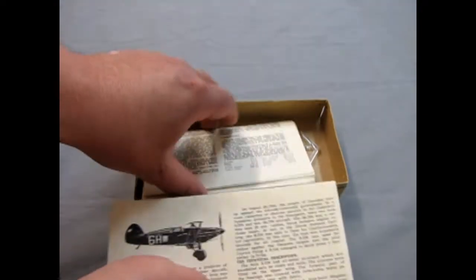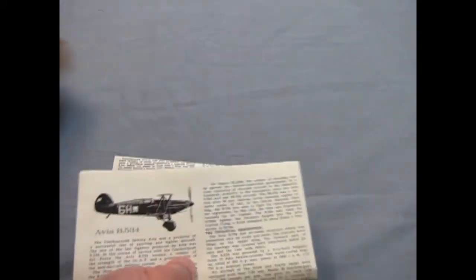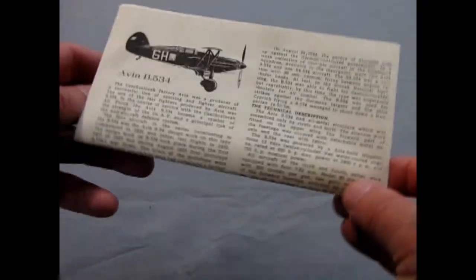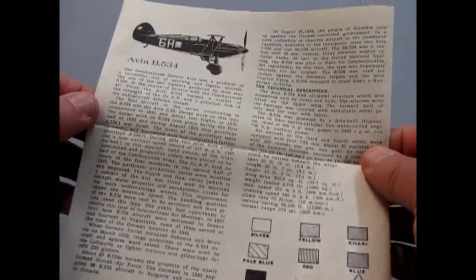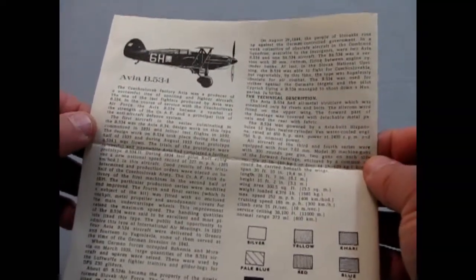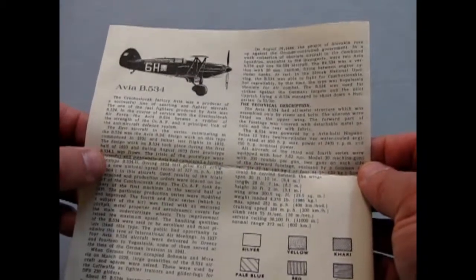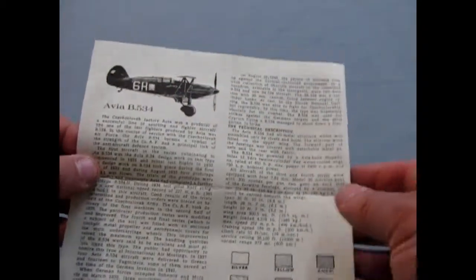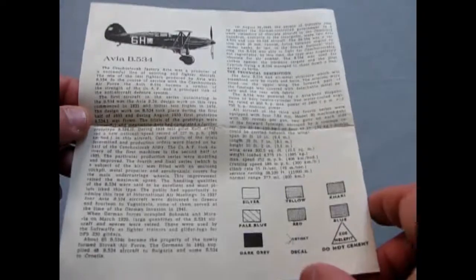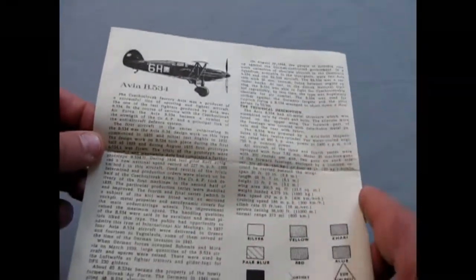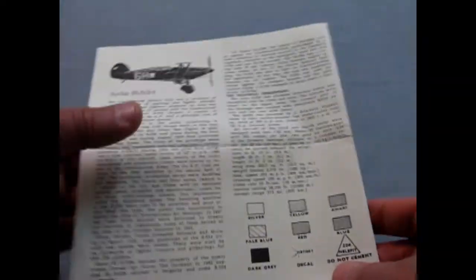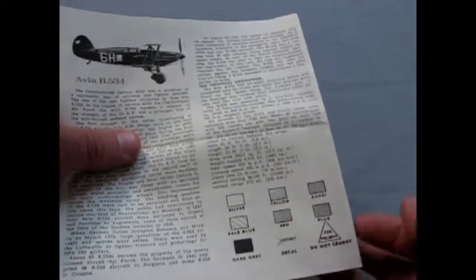Okay, so we start with, we get a few little interesting pieces of paper in the model. So it gives you the history of this model kit. The Czechoslovakia factory, Avia, was a producer of a successful line of sporting and fighter aircraft. And it goes on to tell you a lot of what happened with it. So, they give you some paint schemes here.